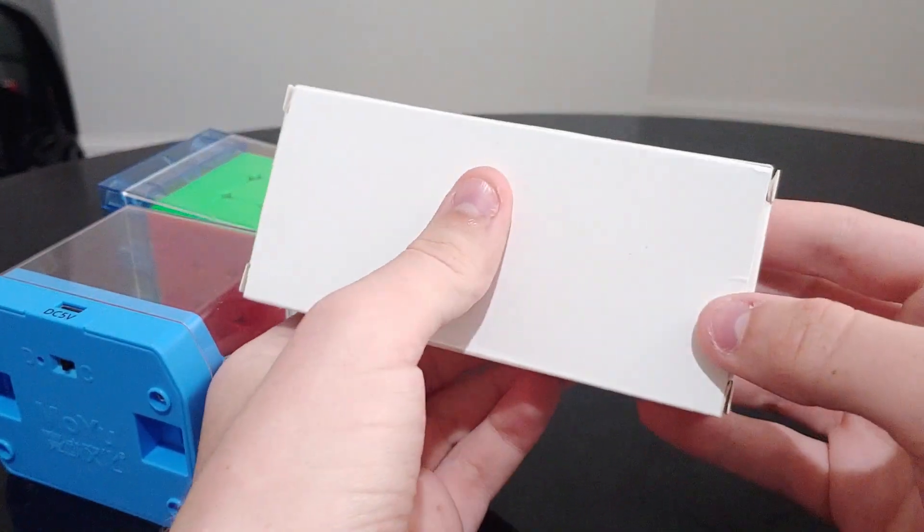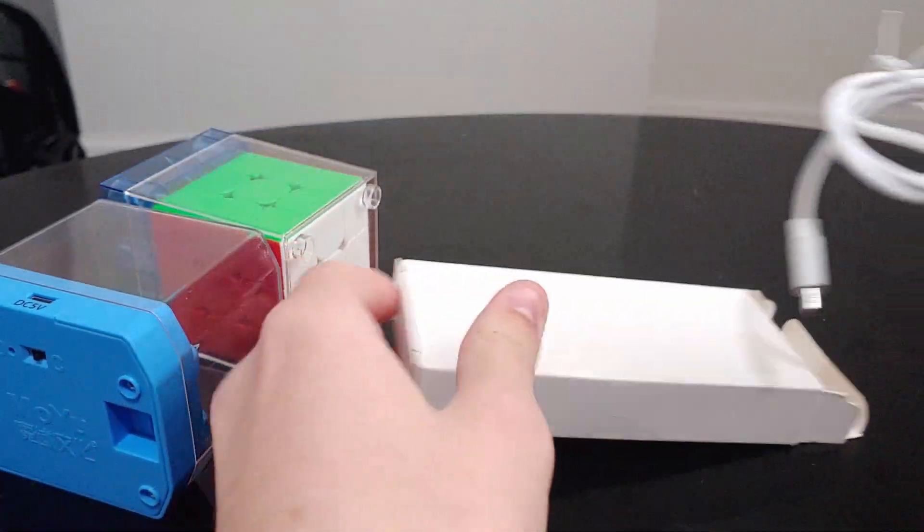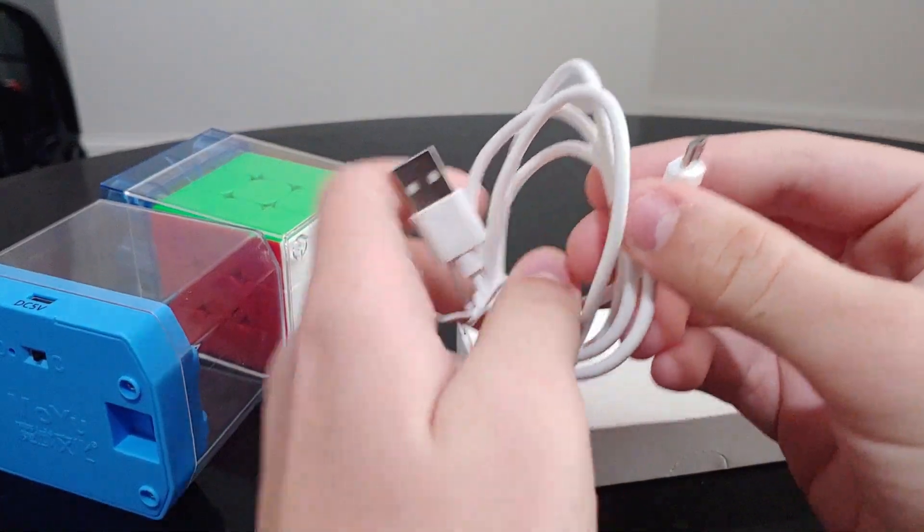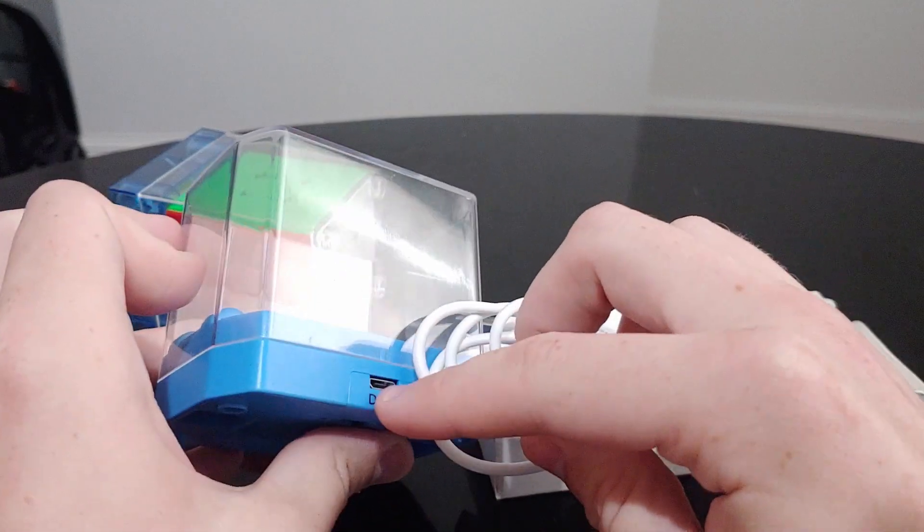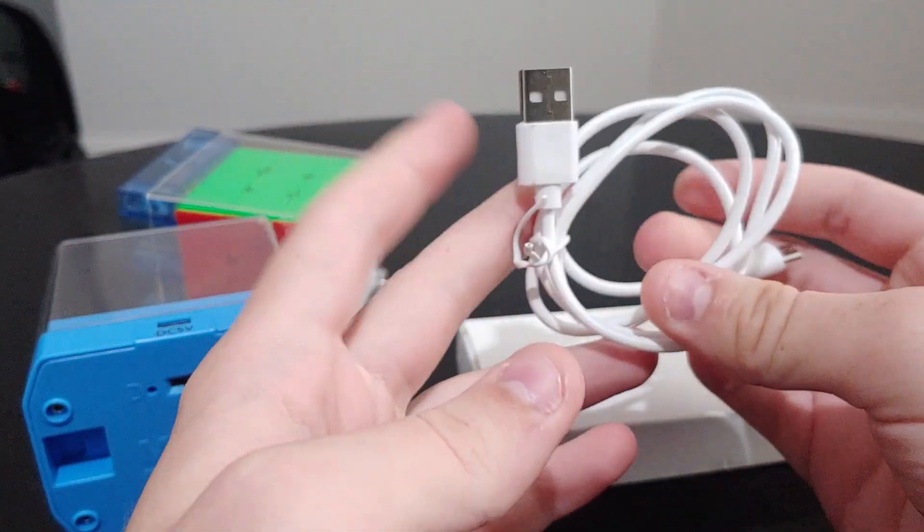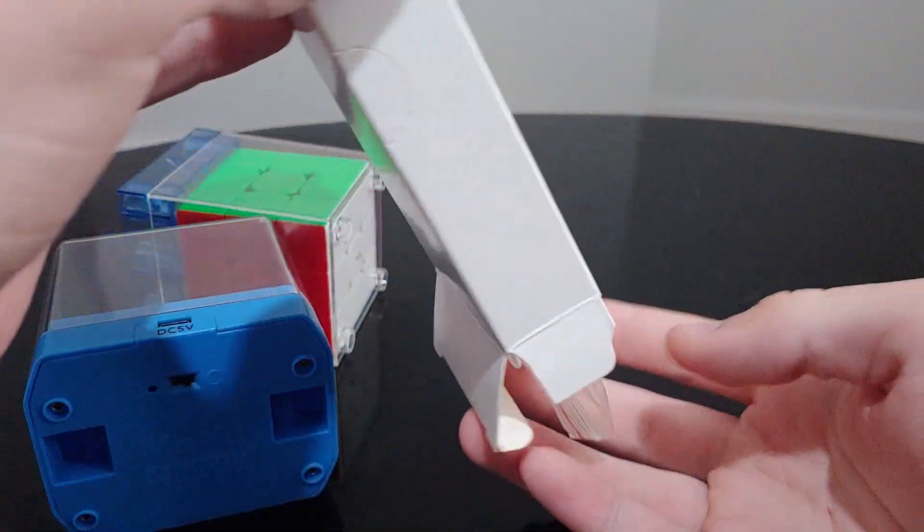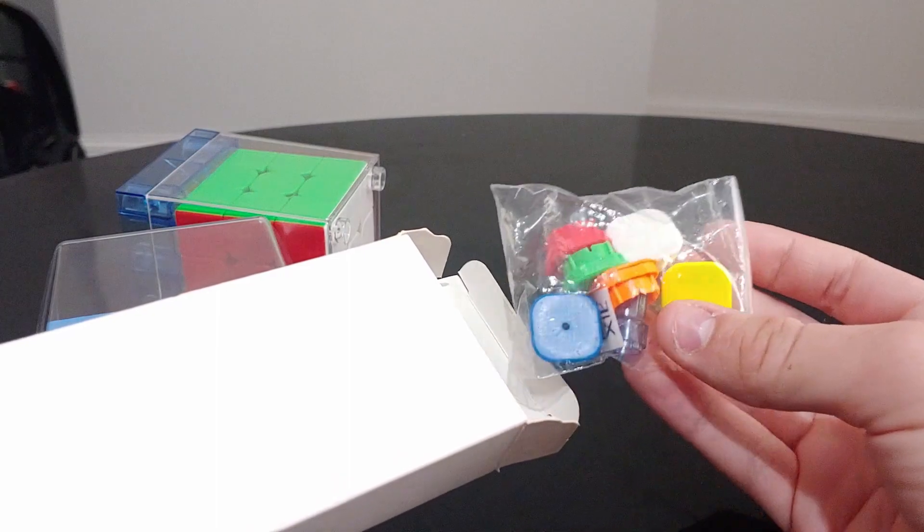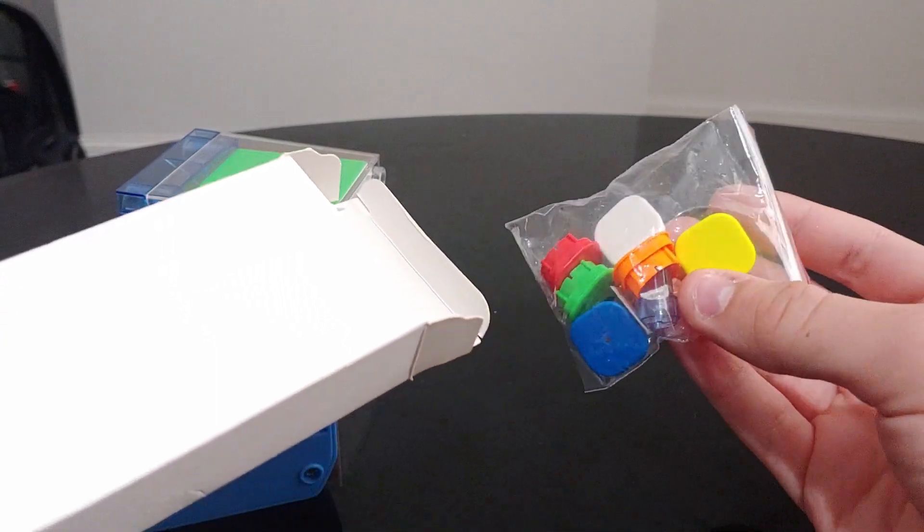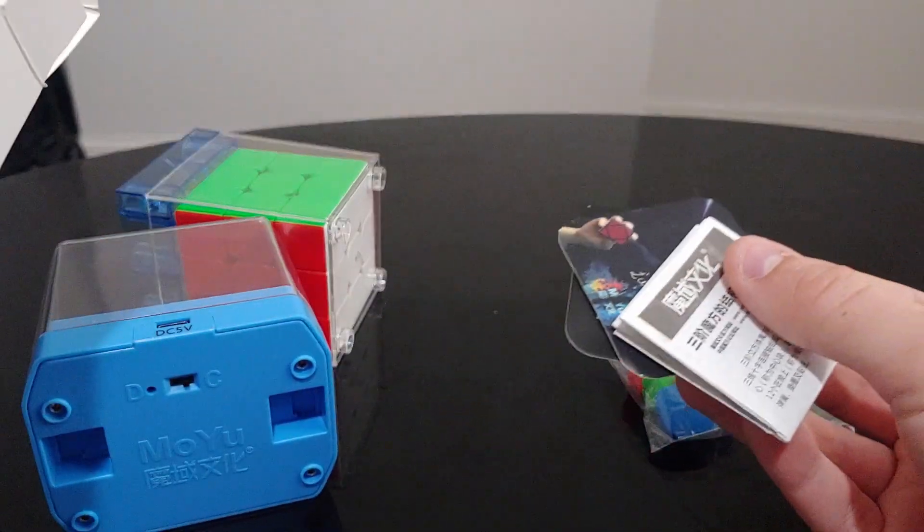I'm going to start with the accessories. First of all, there is a micro USB charging cable, which goes into the case and this end goes to any charging adapter, like a computer or a power brick. There's also a bag with some extra center caps, an adjustment tool, and a Moyu logo. And finally, some documentation.